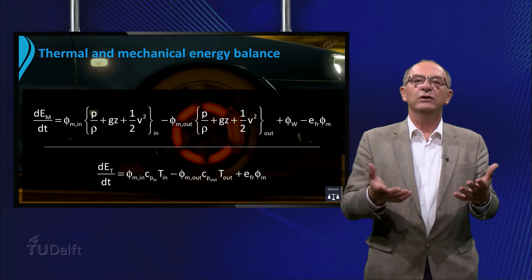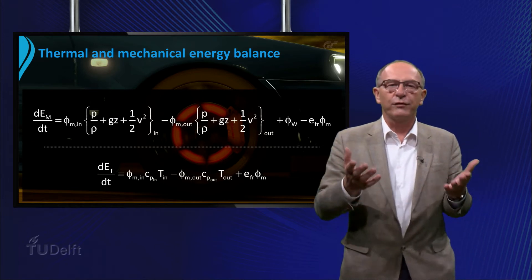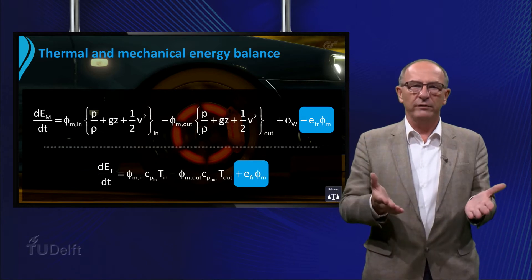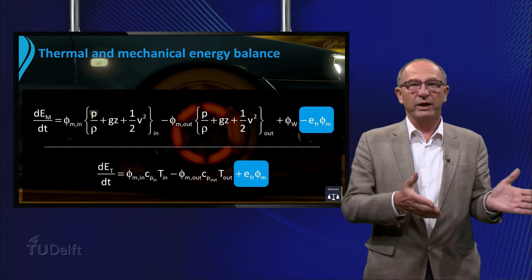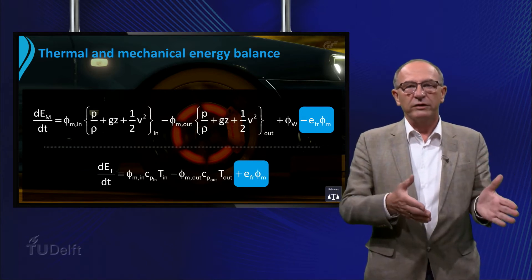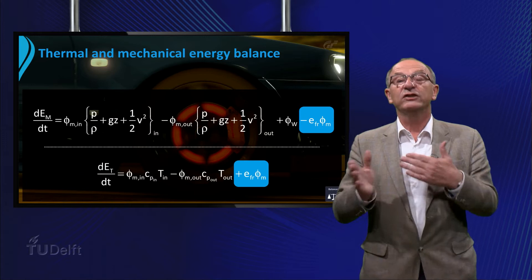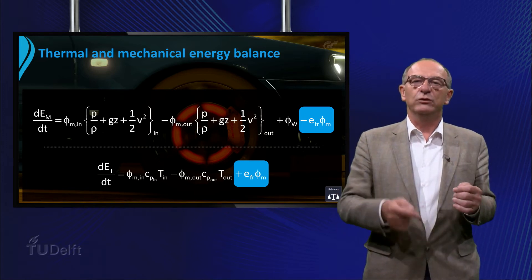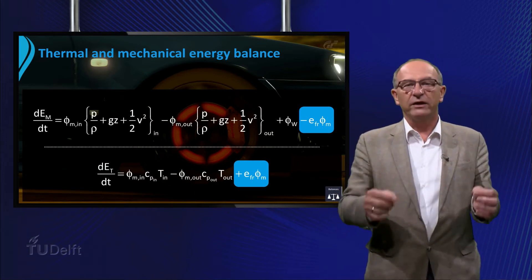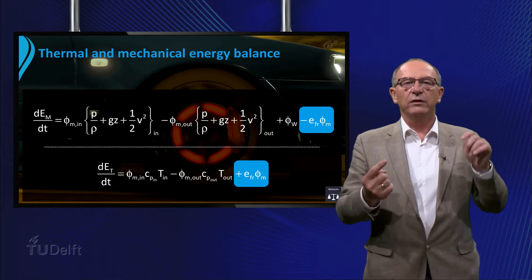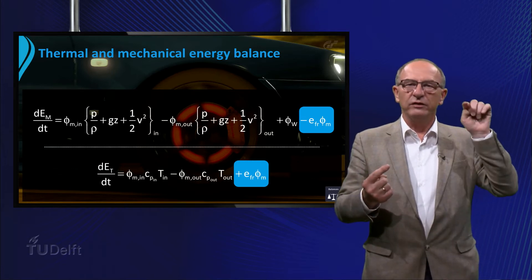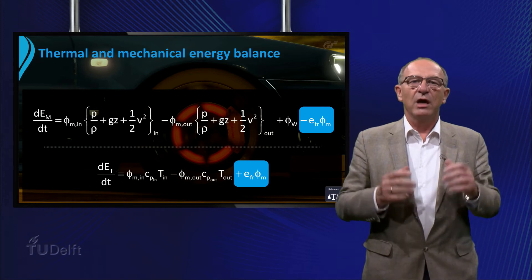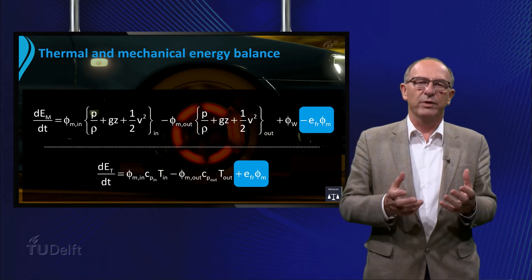You immediately see the occurrence of the friction loss terms E_FR multiplied by the mass flow rate in both balances. Both parts compensate each other. If you convert mechanical energy into thermal energy, the thermal energy will increase, while the same amount of energy will decrease in the mechanical energy balance. Let's zoom in on the mechanical energy balance.